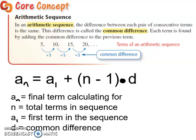Alright, so within an arithmetic sequence, I'm just going to read it. In an arithmetic sequence, the difference between each pair of consecutive terms is the same. This difference is called the common difference. Each term is found by adding the common difference to the previous term. So if I have a sequence of 5, 10, 15, 20, well, the common difference is 5, because I'm adding 5 every single time.